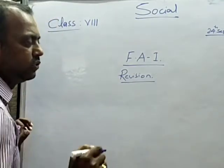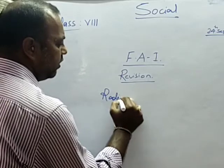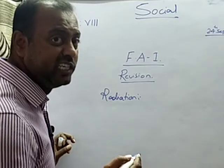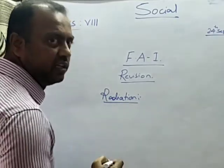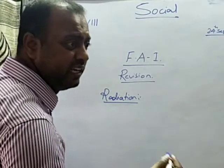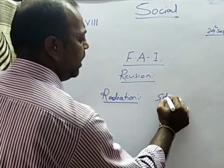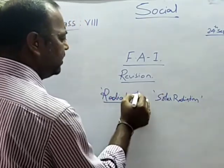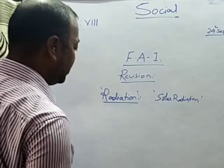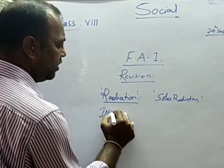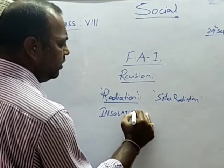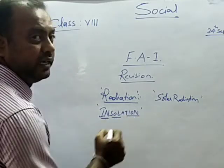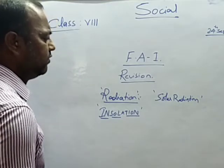Under energy from the sun, we learned two important terms. The first is radiation — any body that emits or gives out energy is called radiation. The sun continuously emits energy in the form of light and heat, so we call it solar radiation. The second term is insolation, which is a short form of incoming solar radiation.